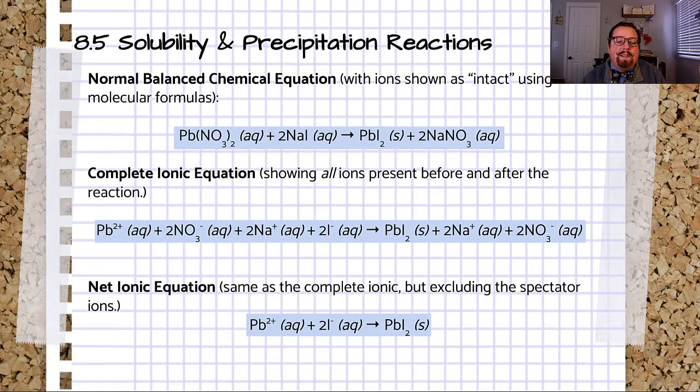One important difference is that instead of Pb(NO3)2, with that 2 outside of the parentheses, since these are split up into separate ions, we say there are two NO3- ions.